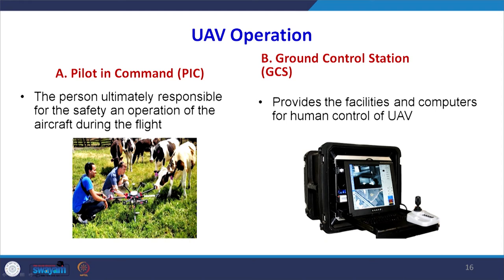When operating the drone, there is important terminology to understand. The pilot in command is the person ultimately responsible for the safety and operation of the aircraft during flight — the person standing on the ground controlling the movement of the entire UAV system. The ground control station (GCS) provides facilities and computers for human control of the UAV system, controlling the movement, landing, and operation of the various mounted sensors.